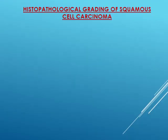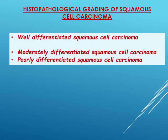The histopathological grading of squamous cell carcinoma is according to the differentiation of the cells, and it is divided into three grades: well-differentiated, moderately differentiated, and poorly differentiated squamous cell carcinoma. The prognosis of the poorly differentiated type is worse than that of the well-differentiated carcinoma.